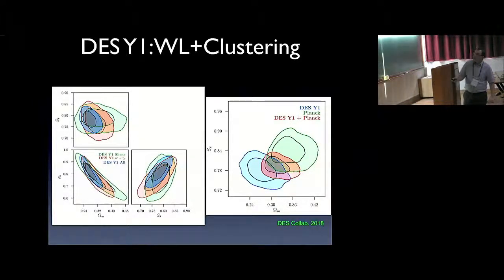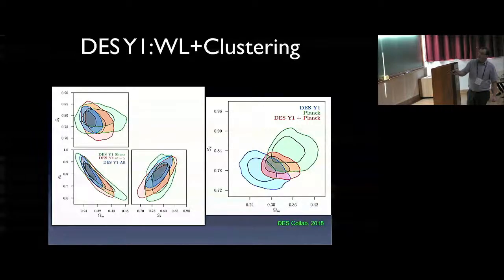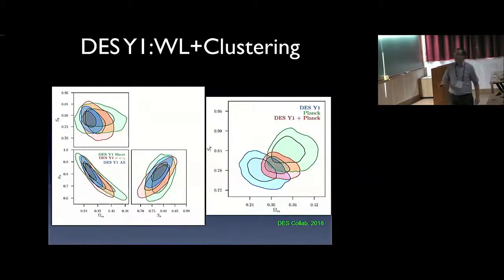What is shown here, for example, is again sigma-8 versus omega m. Let's look at the S8 plot, where you see the contours that we get for weak lensing only, the green contours. Then, in red is the contours that we get when we use clustering and the cross-correlation between galaxy clustering and weak lensing. If they're combined together, then we get the blue contours, which are, of course, smaller.